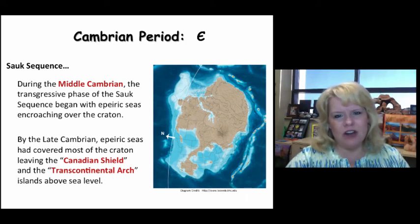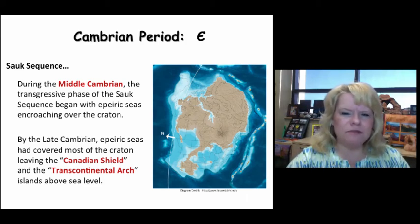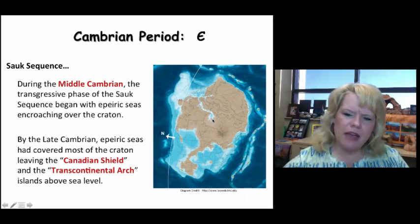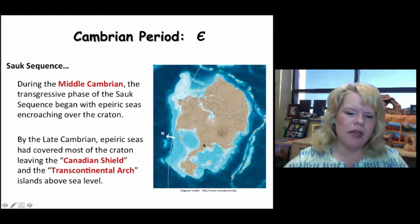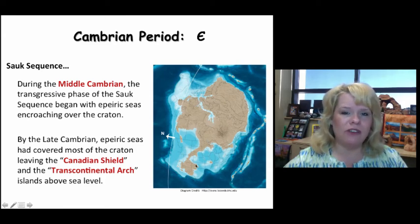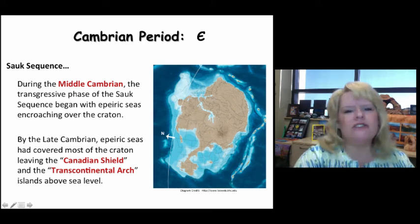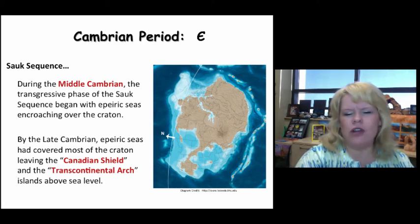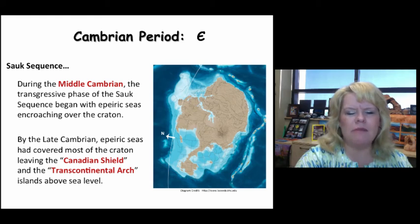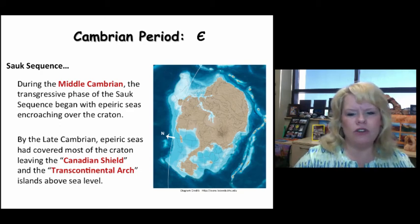The Sauk Sea invaded into the areas around the Canadian Shield and the islands that make up a trail from the Great Lakes down to New Mexico — called the Transcontinental Arch. By the middle Cambrian, the transgressive phase of the Sauk had been in full effect, and Epeiric Seas were encroaching onto the continent. The ocean had been out on the margins and was starting to work its way into the middle of the continent.